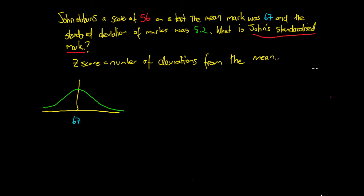And the score John got was 56, so we know it's below 67, so it's to the left. And we know that the standard deviation, so one standard deviation away from the mean is 5.2. So that's 5.2 there.